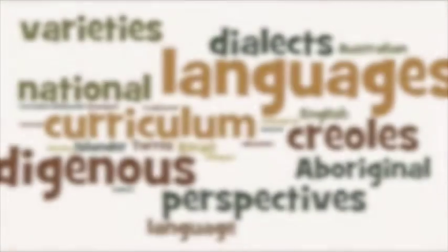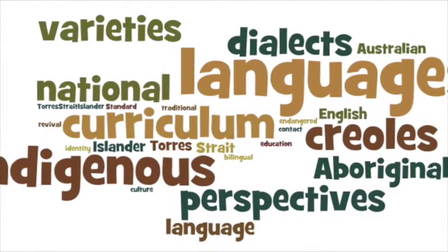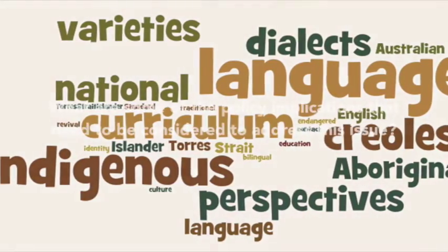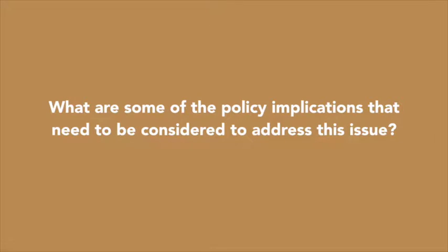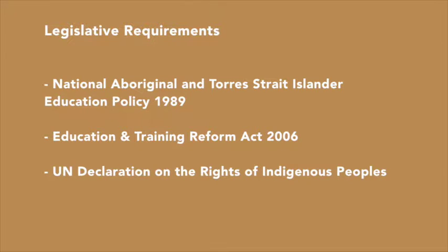The Australian Government emphasised the legislative requirements for students with additional education needs, such as Indigenous Australian students who experience disadvantage. These legislative requirements highlight that schools have an obligation to ensure that students with additional education needs can participate in school programs where they can develop their skills, knowledge and understanding. These requirements are mandatory under the Education and Training Reform Act 2006, the National Aboriginal and Torres Strait Islander Education Policy and the UN Declaration of Rights of the Indigenous Peoples.